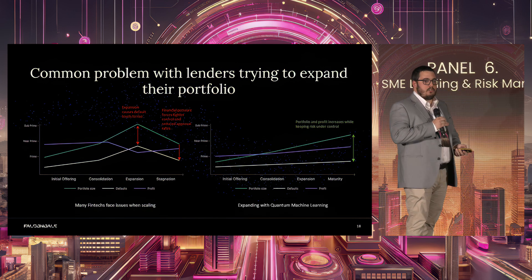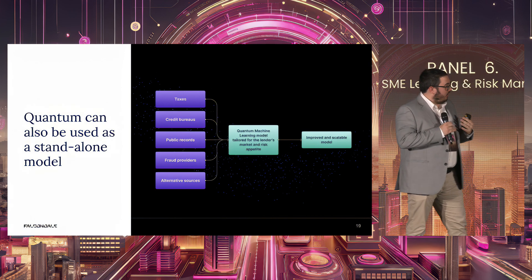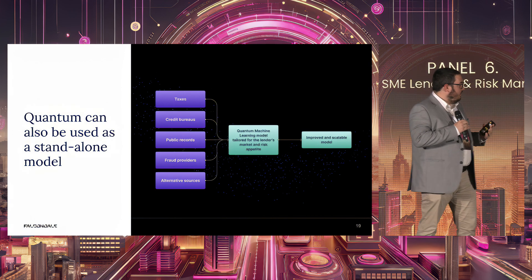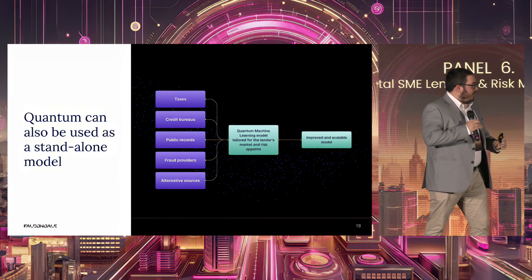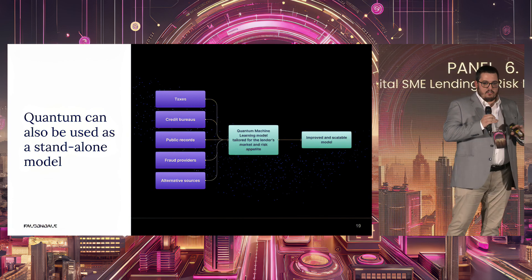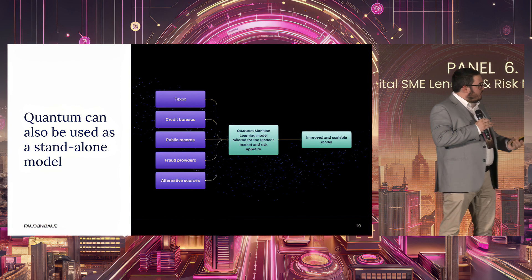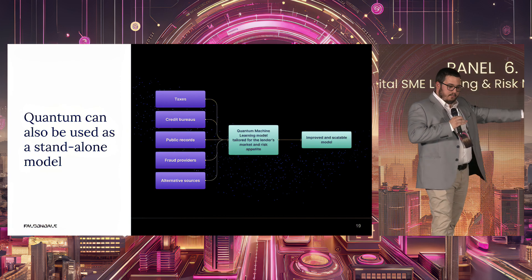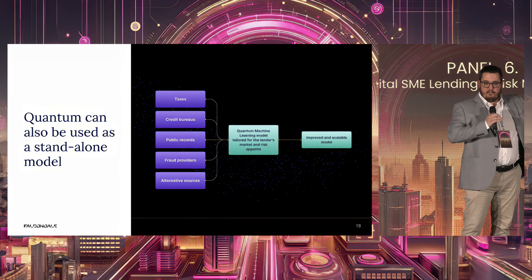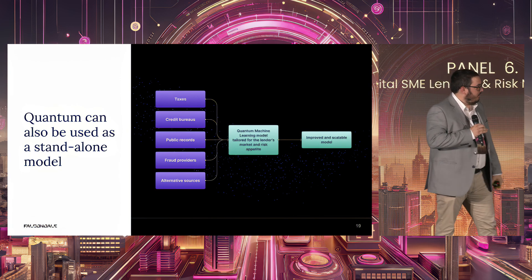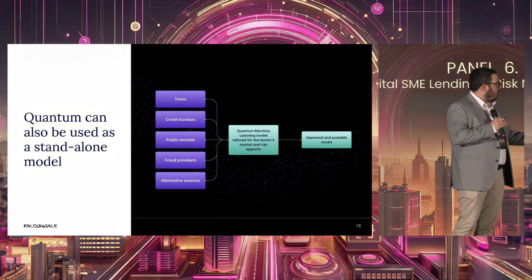That's how expanding with quantum machine learning looks. Of course, quantum can also be used as a standalone model — if you don't have a prior model, you can use quantum at the end of the day as a machine learning model with steroids, with quantum kernels making it better. You take all of your data sources — all 50 that were mentioned — run them through the quantum machine learning model tailored for your market and risk appetite, and you have your improved and scalable model.